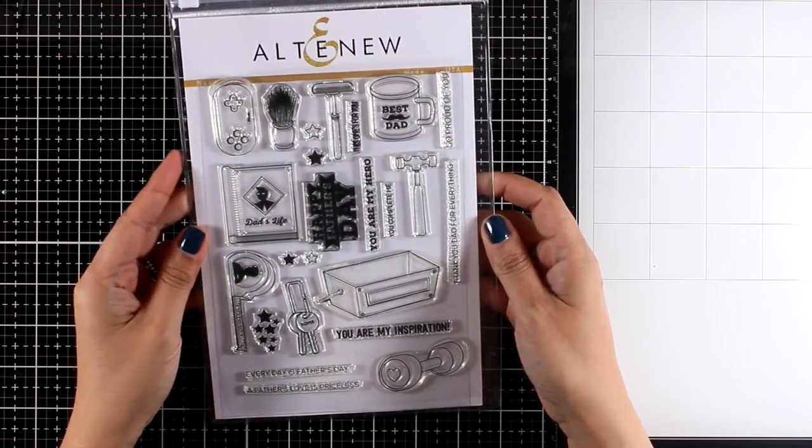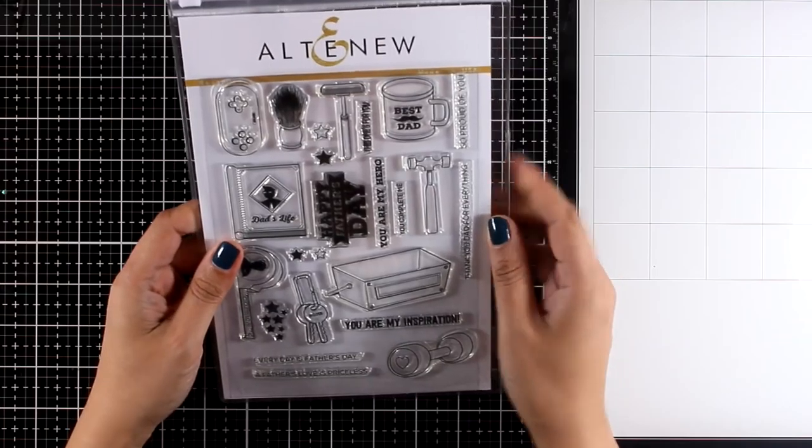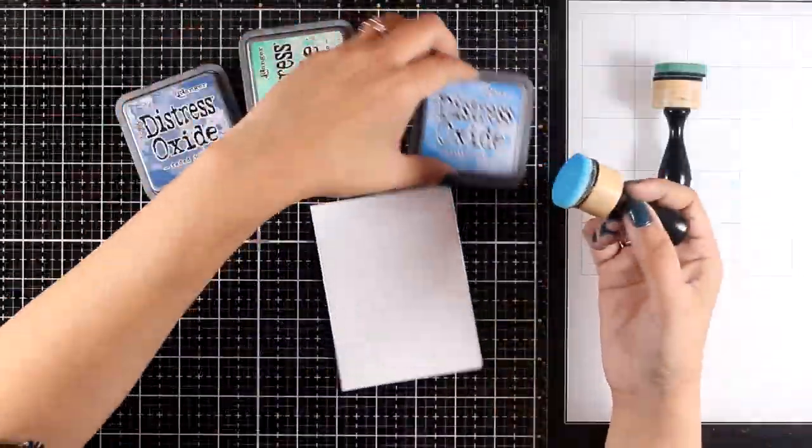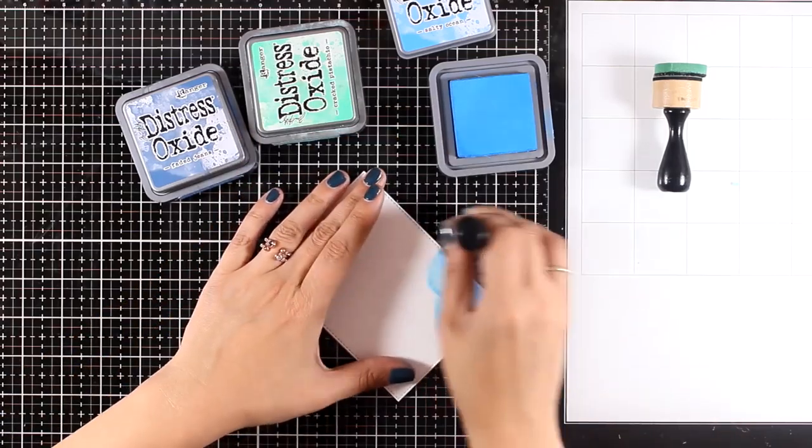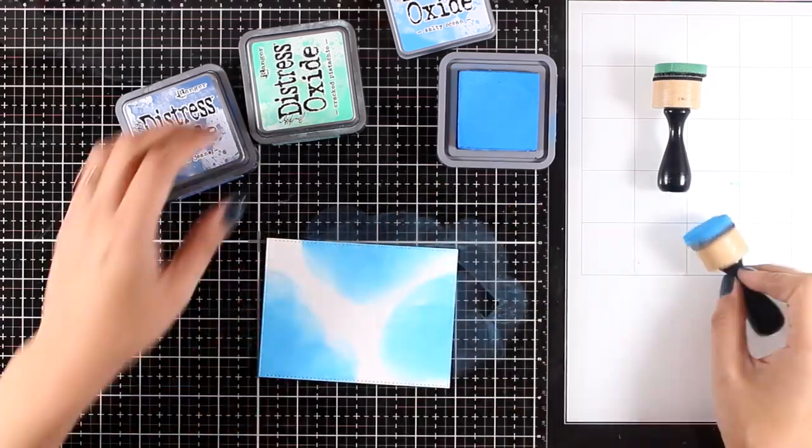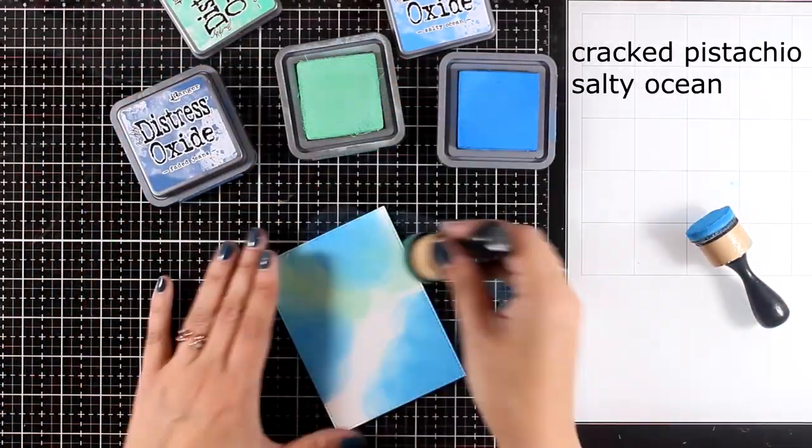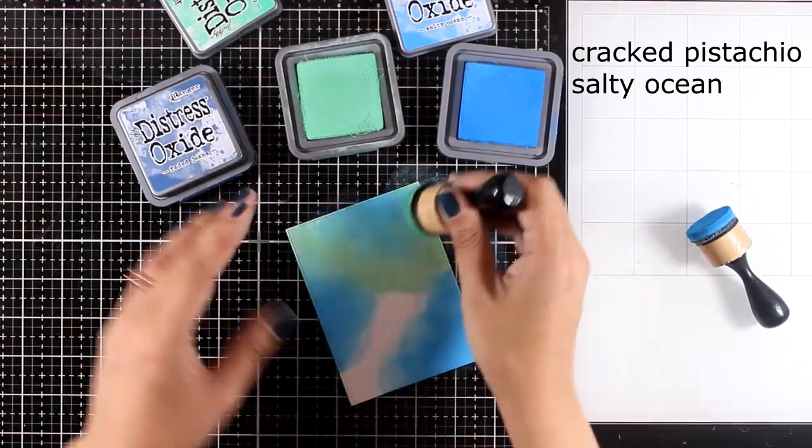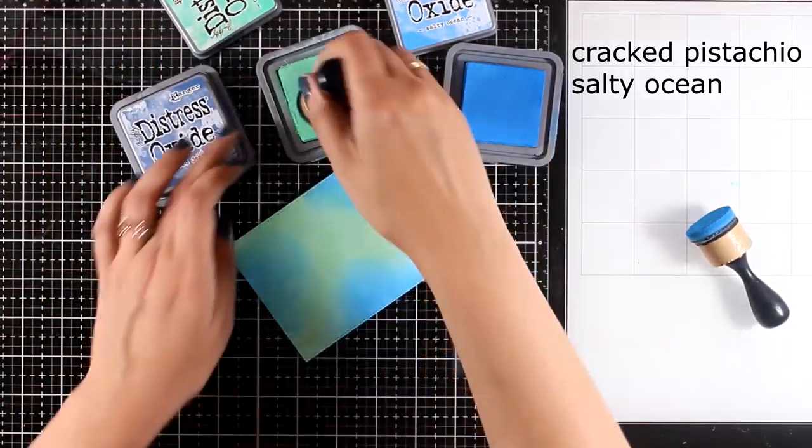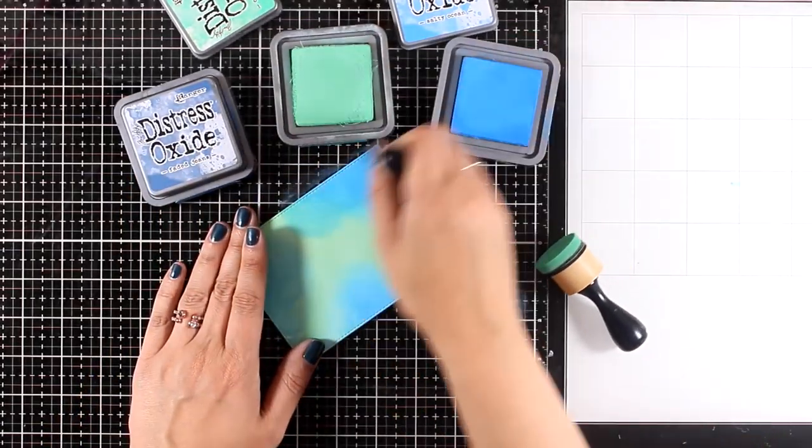For my card I'll use this stamp set, the Best Dad stamp set by Altenew. It's packed with masculine designs along with lovely sentiments for dads. I'm going to create a background with my distress oxide inks. You can see the colors I'm using on your screen right now. This bundle, the Best Dad stamp set and matching dies, are on sale with 35% off. You'll find the link down below.